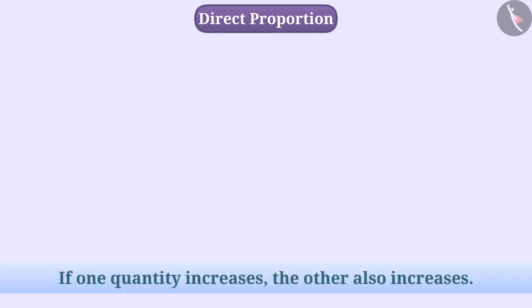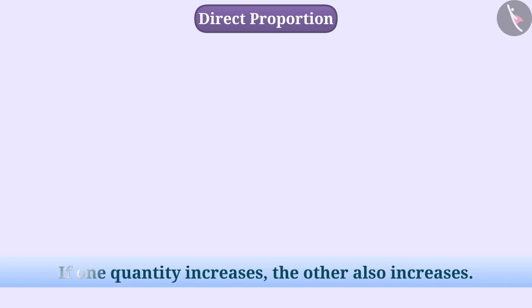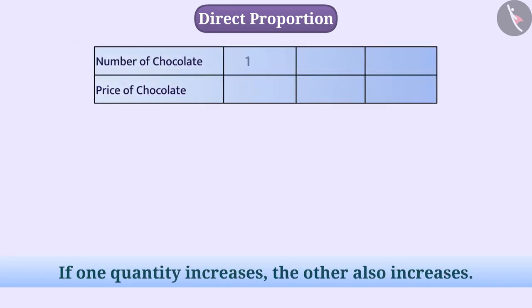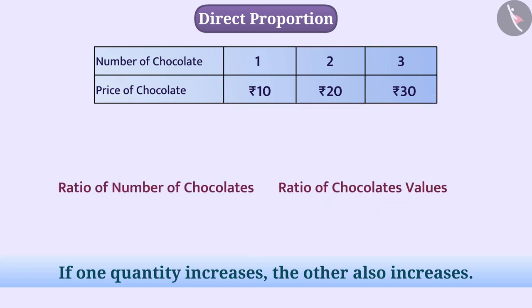Many times, we encounter situations such that if one quantity increases, the other also increases. For example, if the number of chocolates increases, their price also increases. But, in each case, the ratio of number of chocolates and their prices will be same.